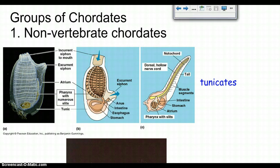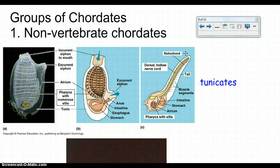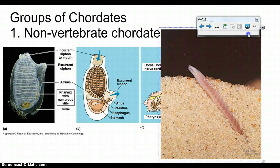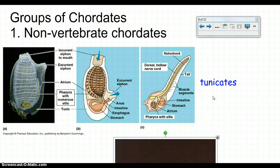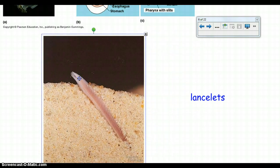There are two groups of chordates: those whose notochord doesn't turn into a spinal column, and those whose does. You could be a chordate and not have a vertebral column. Examples include tunicates and lancelets. Tunicates have a notochord but no spinal column. Lancelets also have a notochord at some point in development but have no spinal column. Those are the only two examples of non-vertebrate chordates.